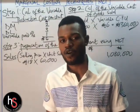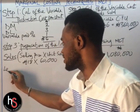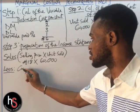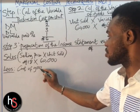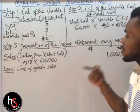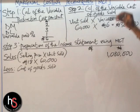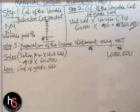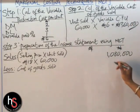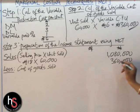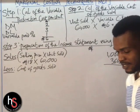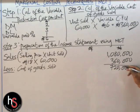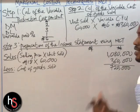Next, we deduct the cost of goods sold. Our variable cost of goods sold, which we calculated in step 2, is 360,000 Naira. Subtracting 360,000 from 1,080,000 gives us a balance of 720,000 Naira.